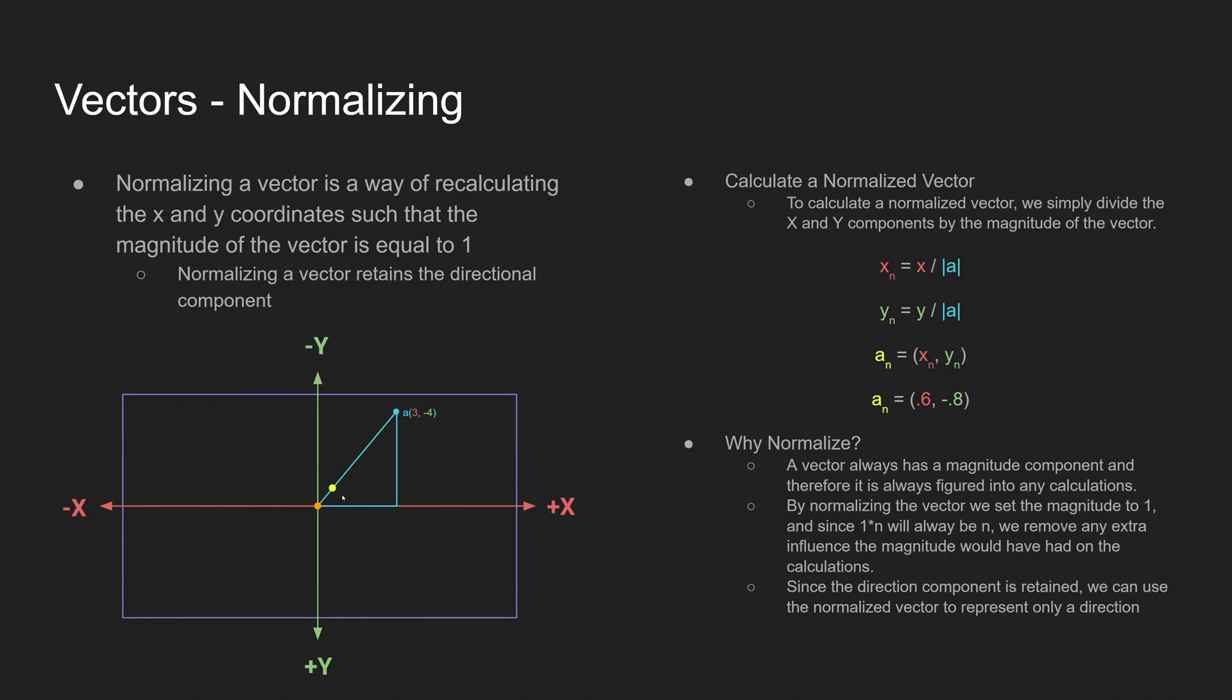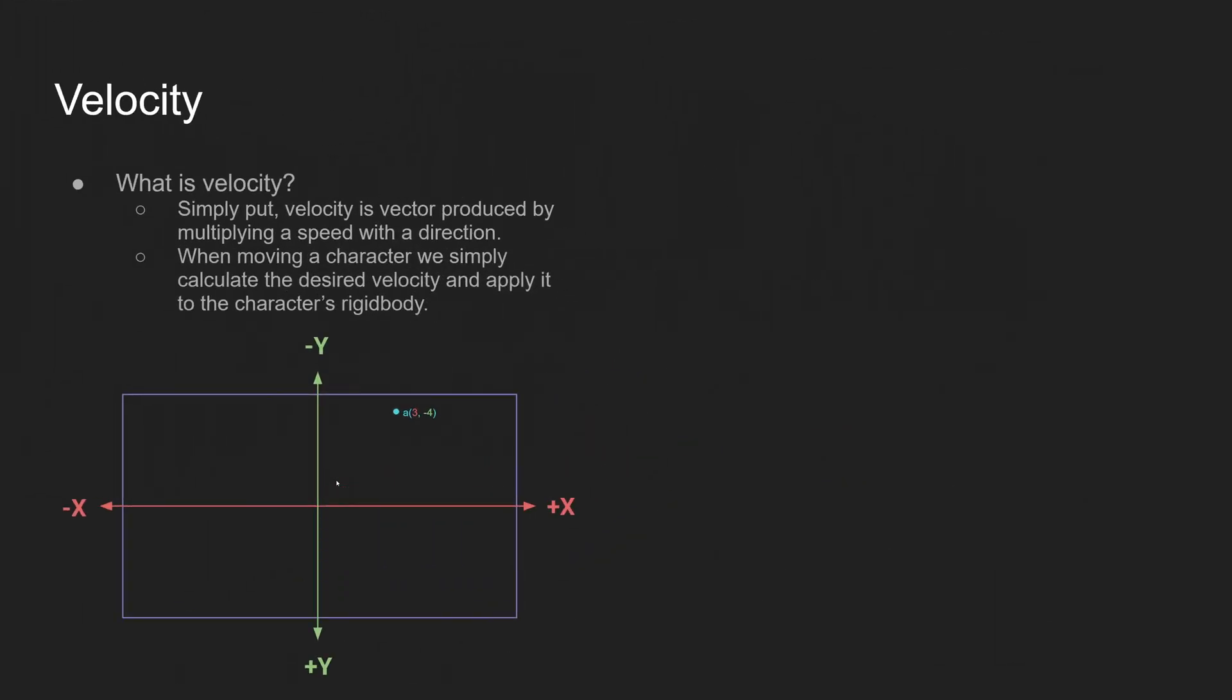So if we take a quick look at the graph here, you'll see this yellow dot. That's our normalized vector. That's a_n. And you see how it's moved down this line. But it's still on the line. The length of this, the distance from the origin to this vector, is 1 unit. But the directionality has remained the same, because the point still exists on this line.